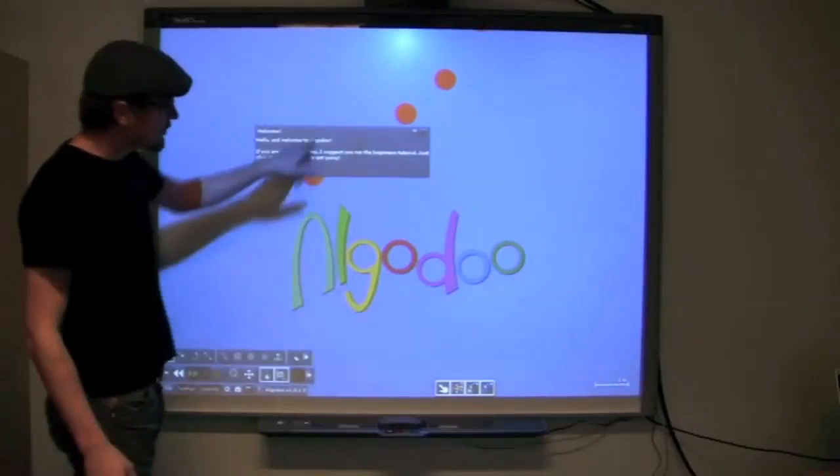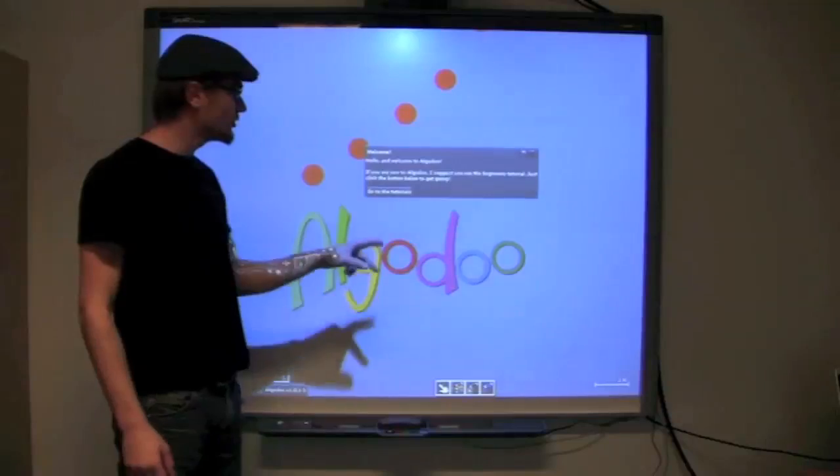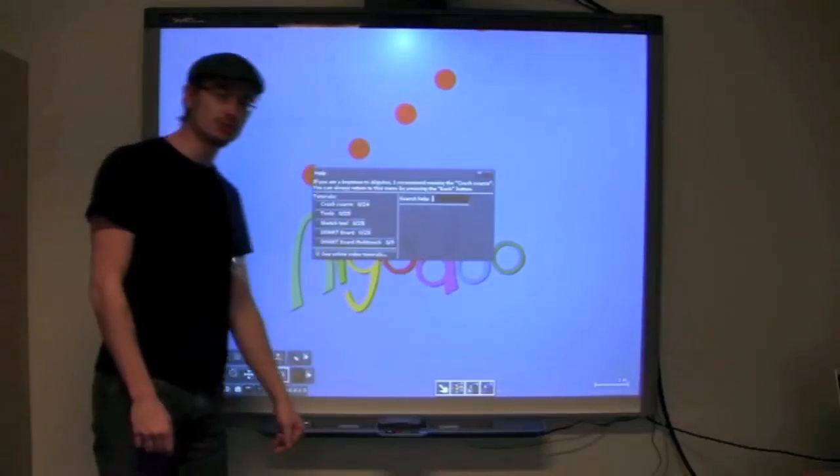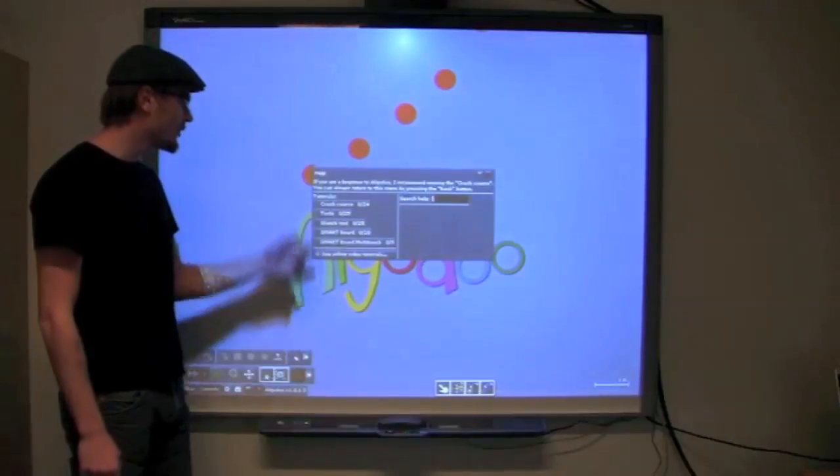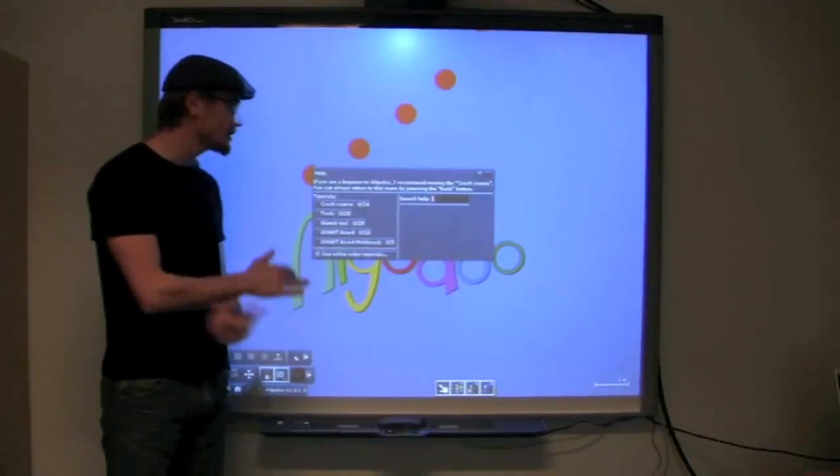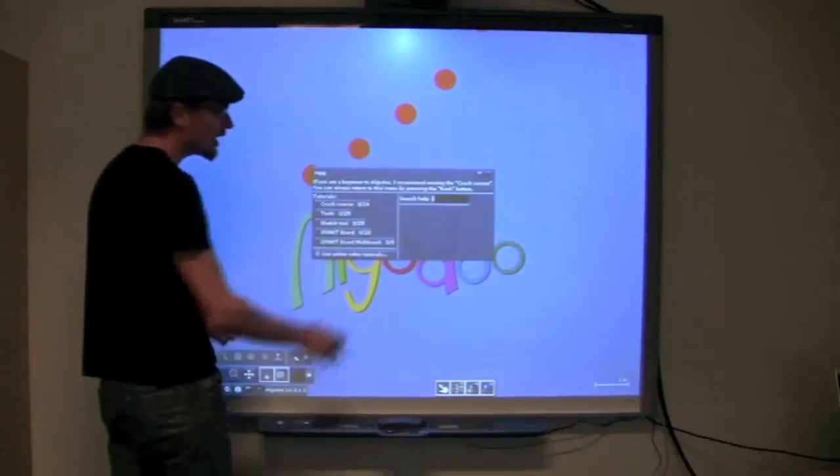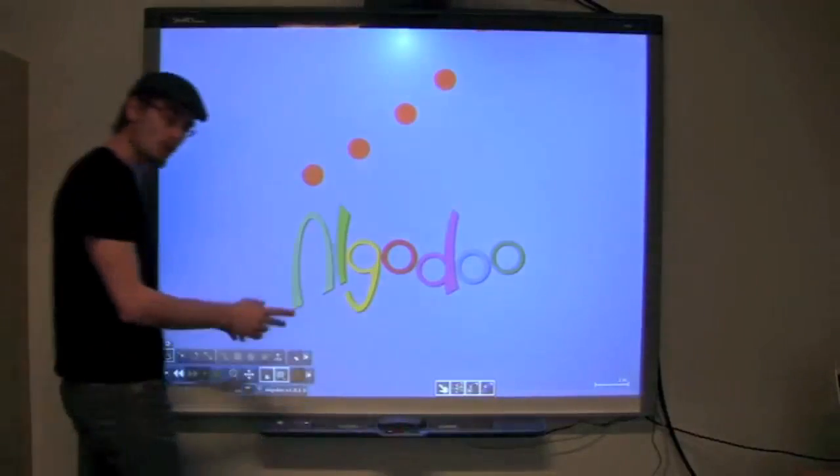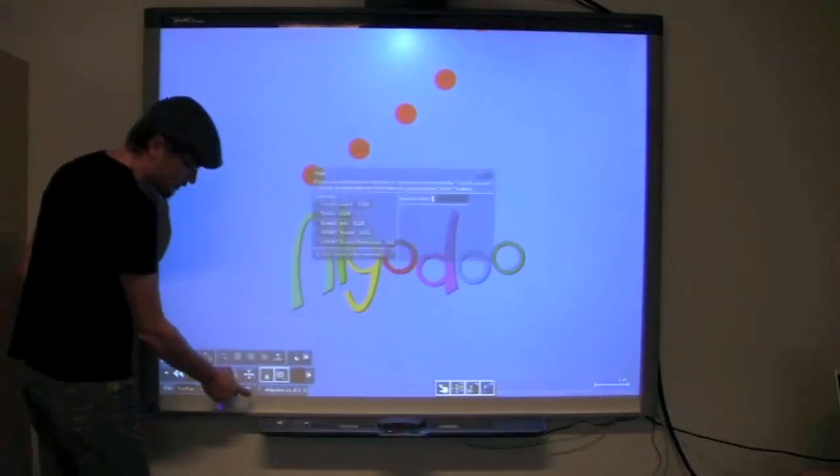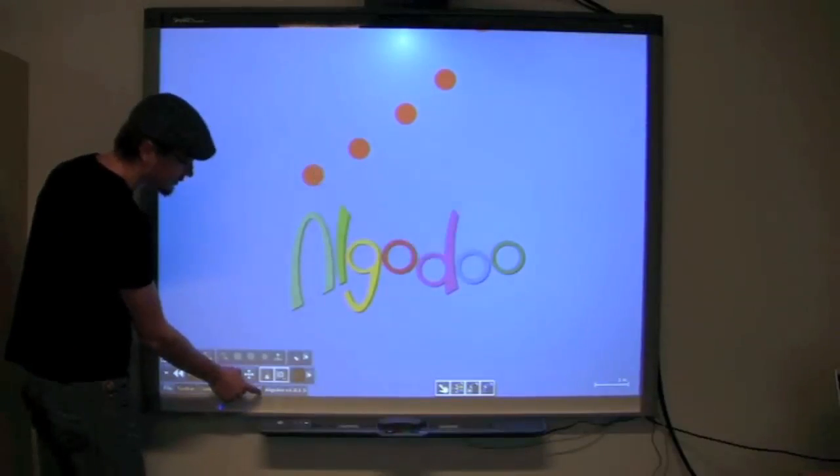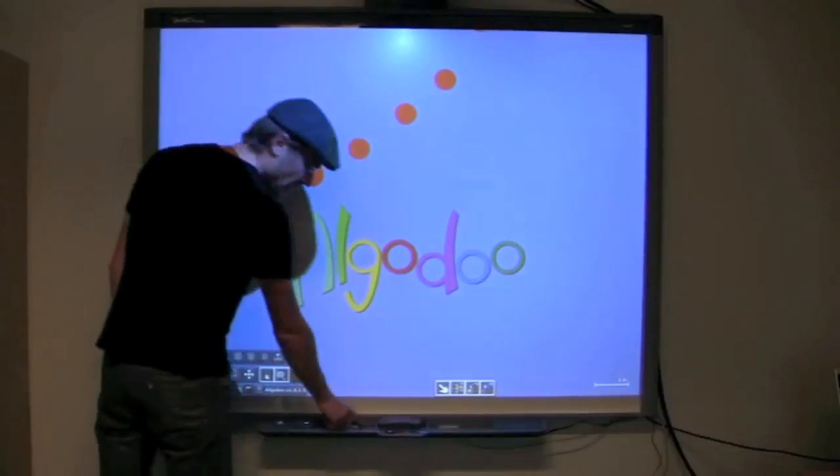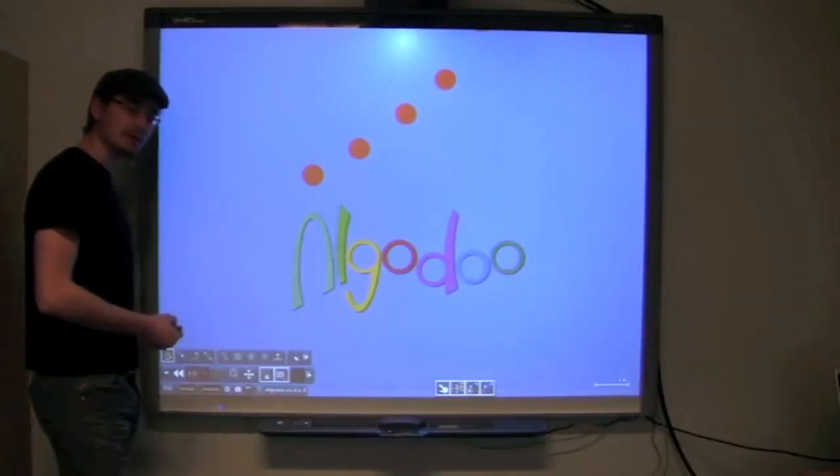Now the first thing Algodoo is going to ask you to do is go to the tutorials. I recommend you if you have the time to go through these tutorials as they will teach you pretty well how to use Algodoo. But for now we're going to close that one. You can always find it again by pressing the question mark down there. You can always get back to the help menu. But for now I'm just going to give you some quick demos.